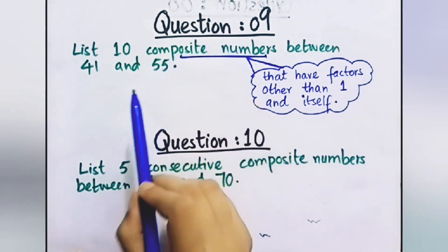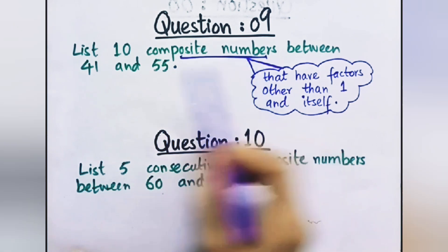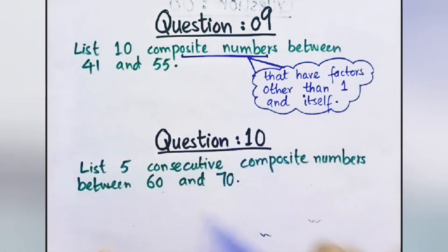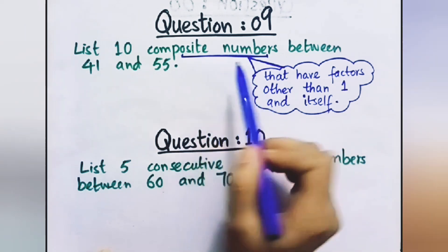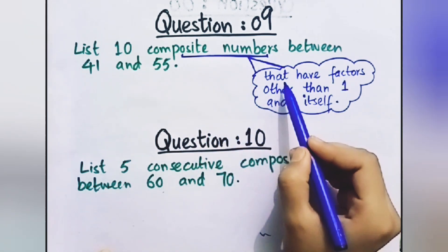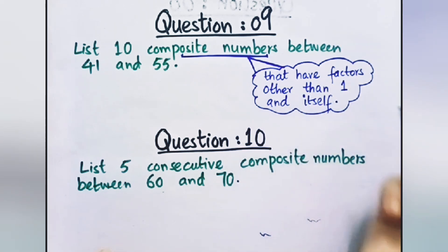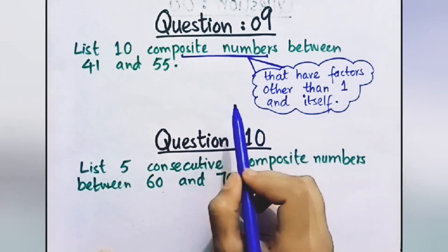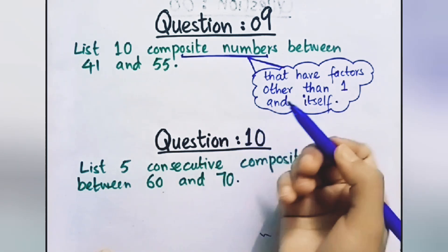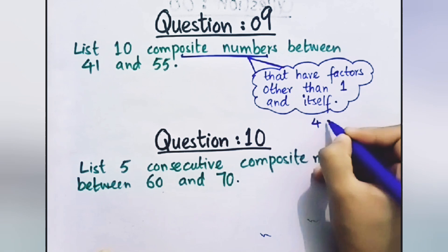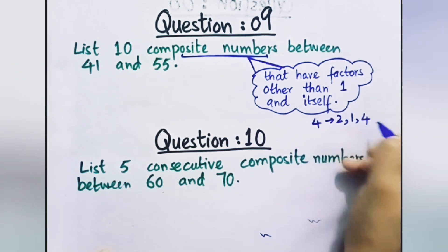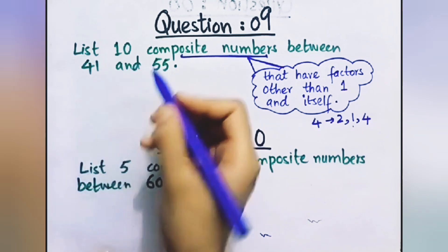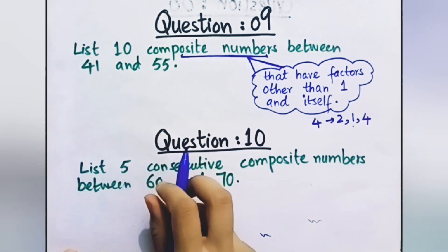Question number 9: List 10 composite numbers between 41 and 55. The opposite of prime numbers is composite numbers. Composite numbers have factors other than 1 and itself. For example, 4 has factors 1, 2, and 4 — so it is a composite number. We need to find composite numbers between 41 and 55, at least 10 of them.